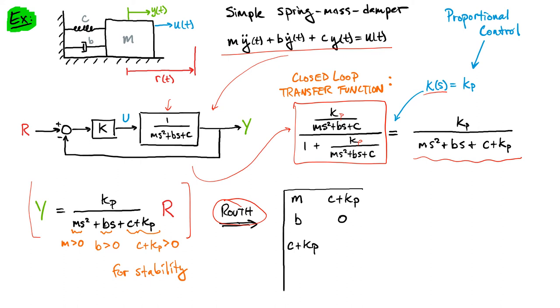In this case, we put our s² term here, our constant term here, our linear term, and then this becomes zero. And so then this term down here is simply this product minus this product divided by b, which gives you just c + Kp again. So this first column indicates that all of these have to be positive, and so that gives us the same criterion as we had before.